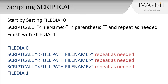Once FILEDIA is set to zero, repeat the Script Call command as needed for each script to be included in the sequence of commands. Be sure to enter the full path file name with quotation marks around it. Finish the script by setting FILEDIA back to one.